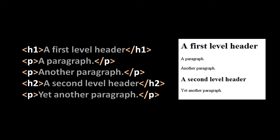And then for the actual meat of your text, the actual paragraphs that make up those sections, you use the paragraph tag, the P tag. So in our example here, we have a document with three paragraphs, and also a first level header and a second level header.